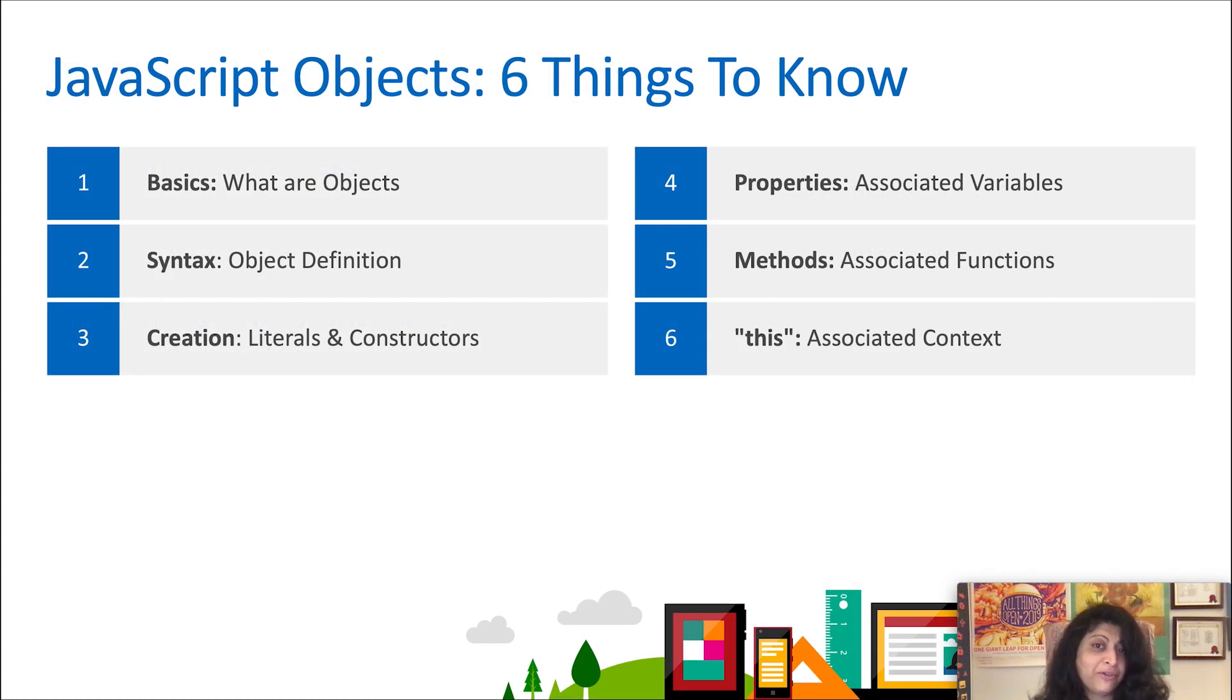With that, that was our super fast introduction to JavaScript objects. Six things that you hopefully learned. What are objects? What is the syntax of an object? How do you create them either as literals or from constructors? What are properties and how do you access them? What are methods and how do you invoke them? And finally, what is this? Hope you had fun. See you at the next module.